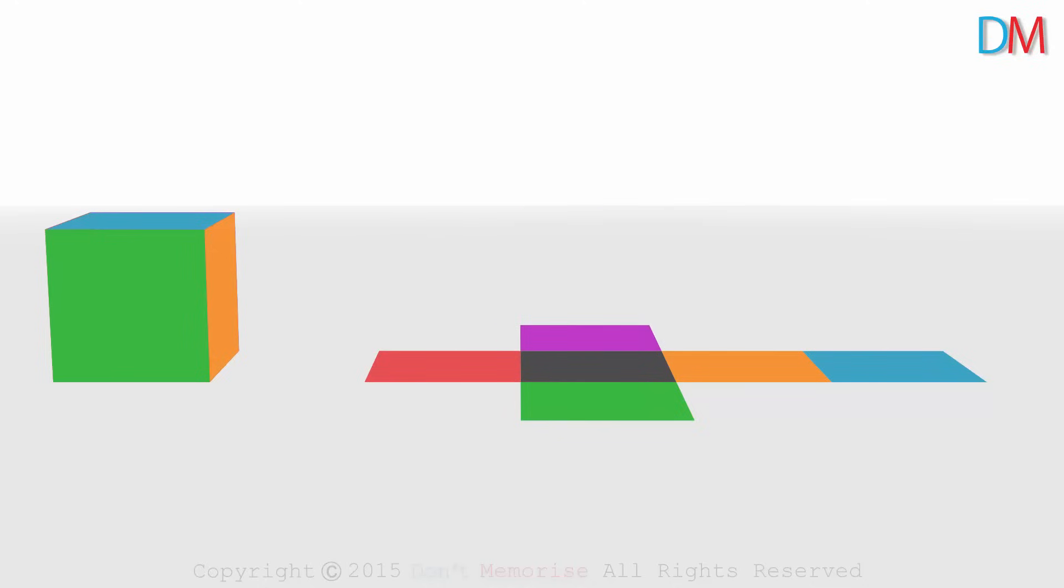Now we have completely opened up the cube along its edges to get a two-dimensional shape like this. But what is this? What is it called? This is called the net of the solid. In this case, it's the net of a cube.